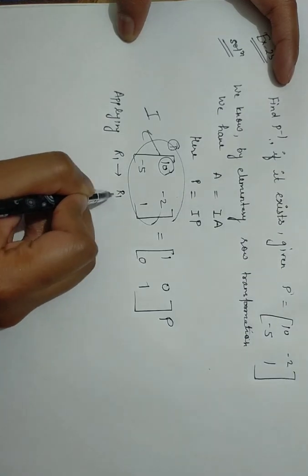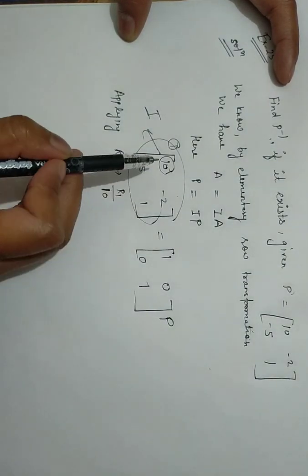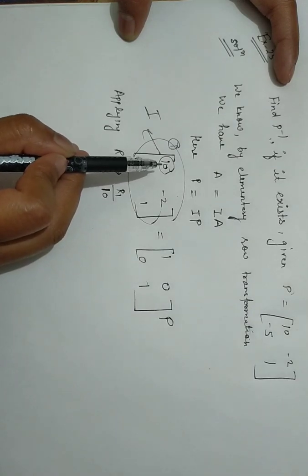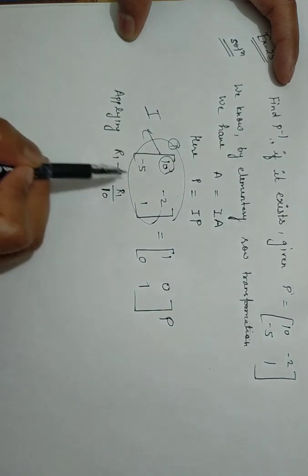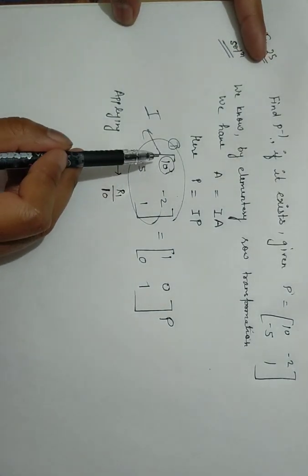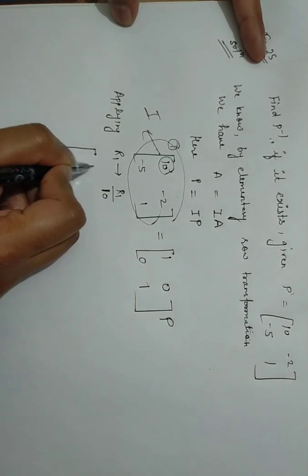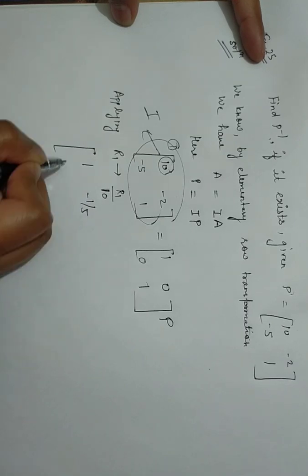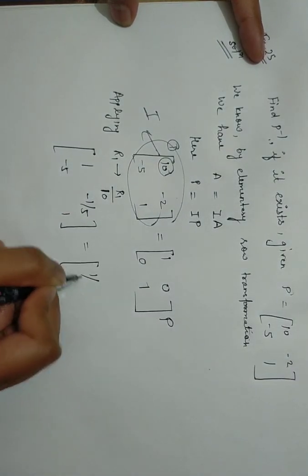Or we can do if I want to make it one, I can use R2 also, that depends on me. I am finding it easy that I will divide by 10, then I will get one directly. So I have 10 upon 10, 1. It will be minus 1 by 5, minus 5, 1. That is equals to 1 by 10, 0, 0, 1, and then P.